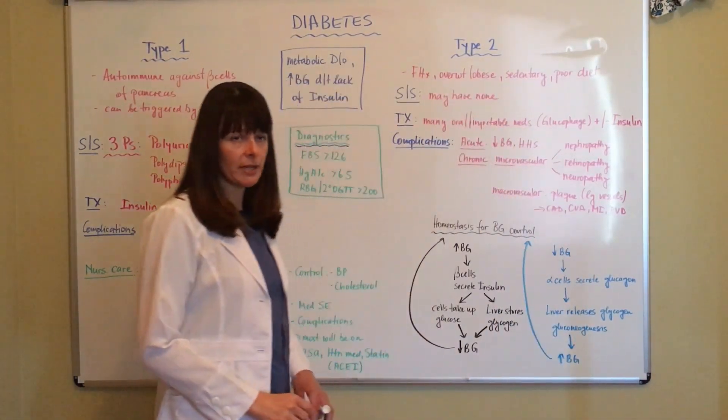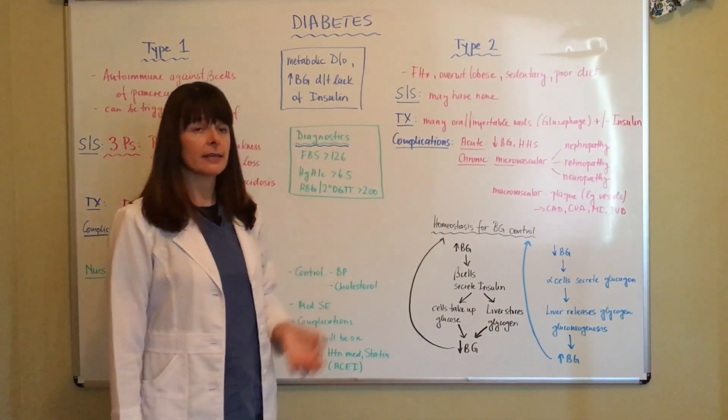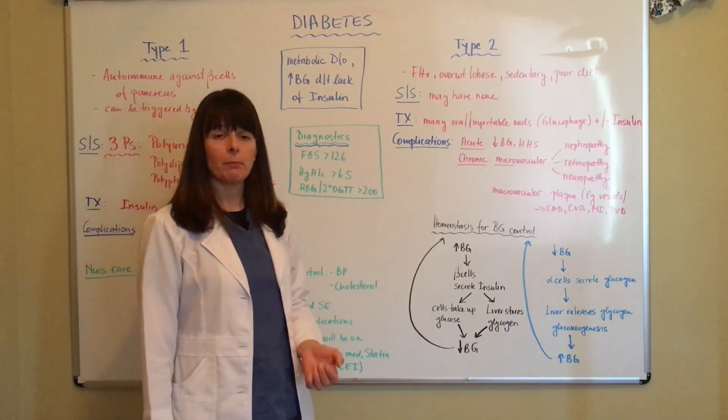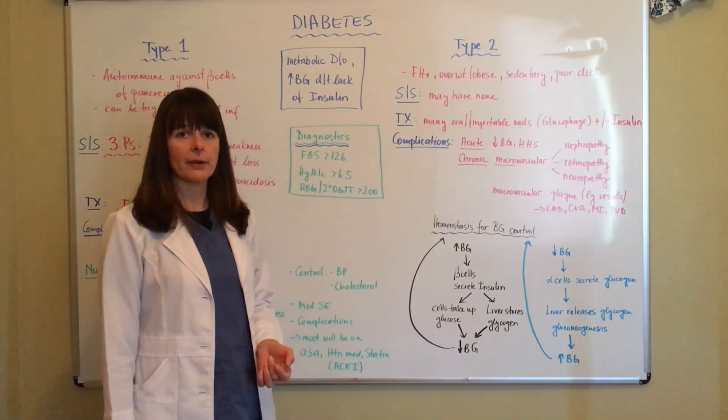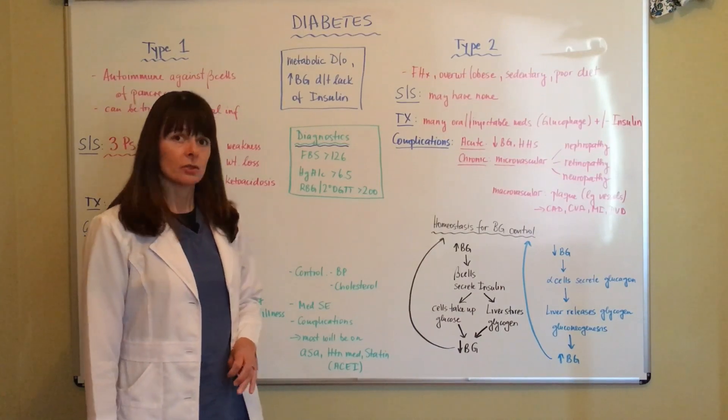In type 2 diabetes, it's usually caused by family history, sedentary lifestyle. Patients who are overweight or obese are at higher risk, as well as poor diet.